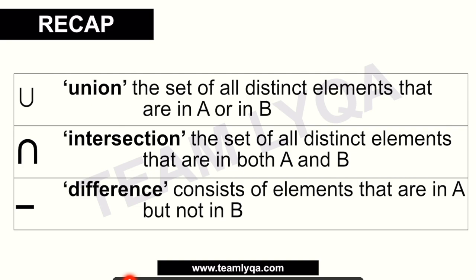Let's do a quick recap of the symbols we covered before. Union is the set of all distinct elements that are in A or in B — basically everything in both sets combined. Intersection is the set of all distinct elements that are in both A and B. The word 'both' is very important — the element must be in A and also in B.